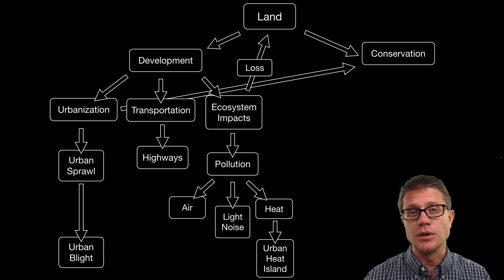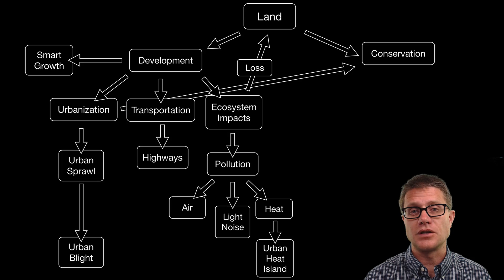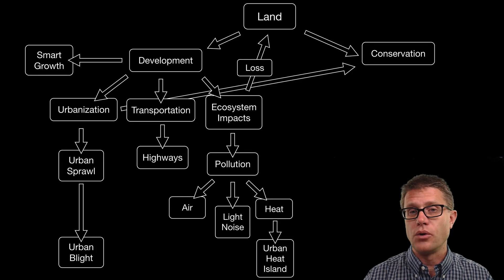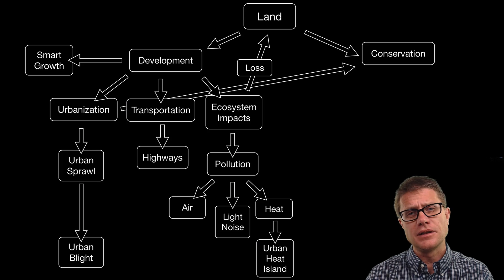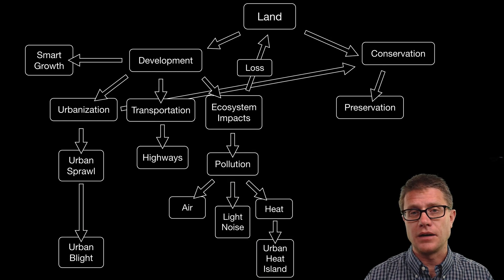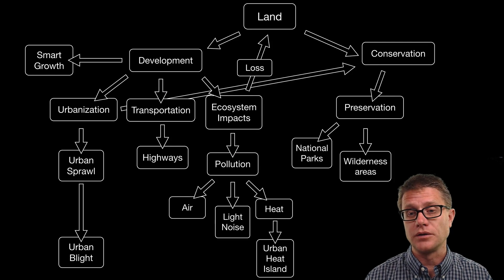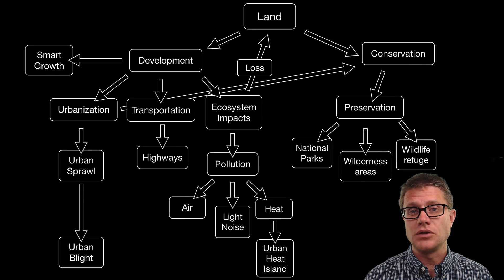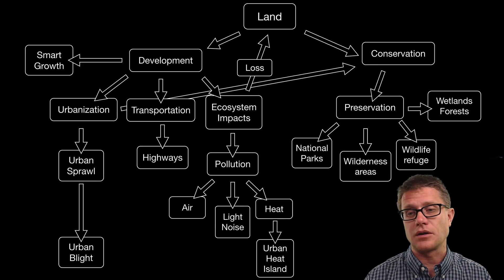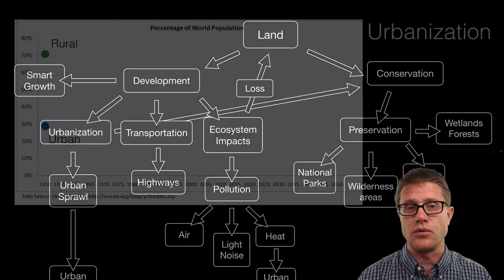We are always going to have development, so people are putting forward this idea of smart growth to avoid some of these negative consequences. But in parallel to that we are also trying to conserve land, and we have been doing this in all countries around the world. In the U.S. this is highlighted in the national parks — we have wilderness areas, wildlife refuges, and around cities we are trying to protect the wetlands and the forests.